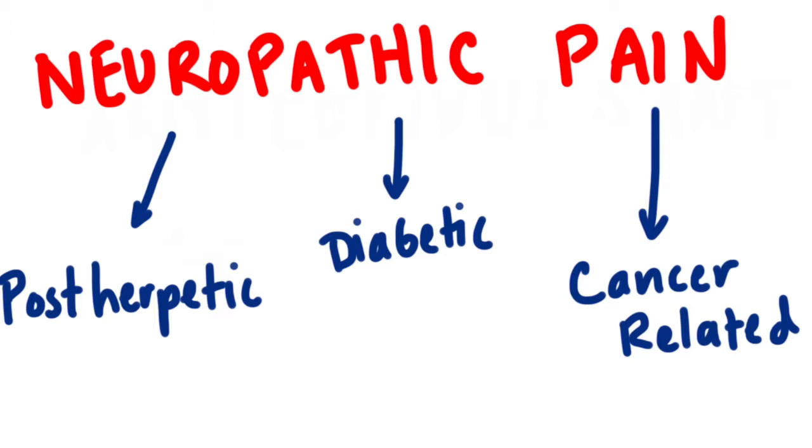Recently, gabapentin was actually approved by the FDA in the treatment of postherpetic neuralgia, but still remains off-label for all other forms of neuropathic pain.